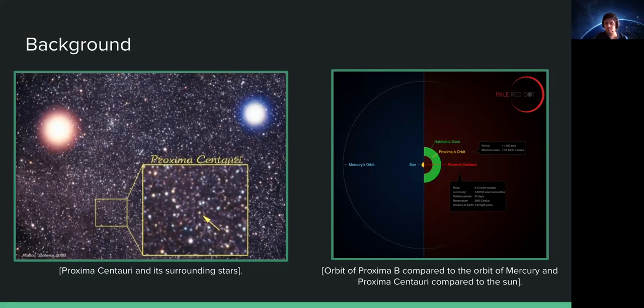Proxima Centauri b is an Earth-sized terrestrial planet that orbits Proxima Centauri, the star that is closest to our sun at about 4.2 light years away. Proxima b star is an M-type star, also known as a red dwarf, and is smaller and cooler than our sun. It's also located in the habitable zone of its star, where liquid water could theoretically exist.